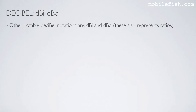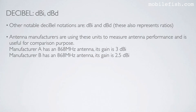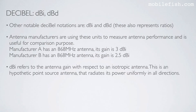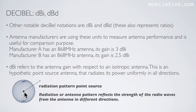Other notable decibel notations are dBi and dBd. These also represent ratios. Antenna manufacturers use these units to measure antenna performance and for comparison purposes. For example, manufacturer A has an 868 MHz antenna with a gain of 3 dBi, and manufacturer B has an 868 MHz antenna with a gain of 2.5 dBi — so manufacturer A's antenna has a better gain. dBi refers to antenna gain with respect to an isotropic antenna, a hypothetical point source that radiates power uniformly in all directions. Radiation or antenna pattern reflects the strength of radio waves in different directions.